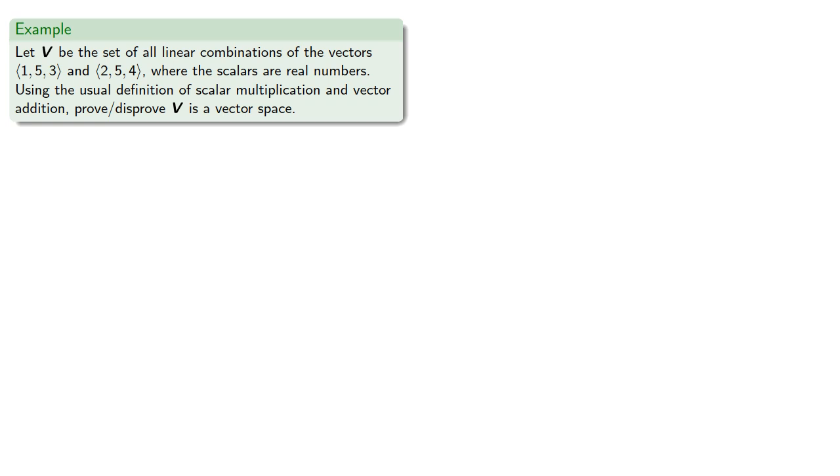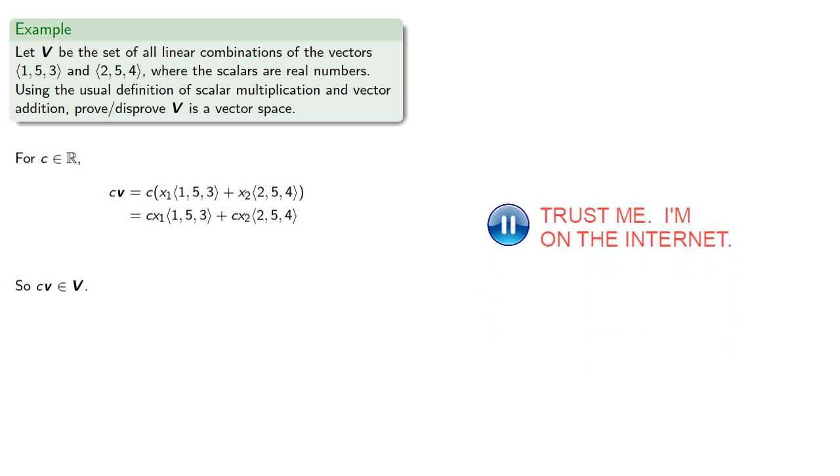Now let's consider scalar multiplication. For c in our scalar field R, we want c times v to be an element of capital V. But we can't just claim it's true, so we'll unpack. c times v, well v is a linear combination. The right-hand side is one level down, so we can use our standard rules. And we find that cv is a linear combination of (1, 5, 3) and (2, 5, 4), so it's an element of V.